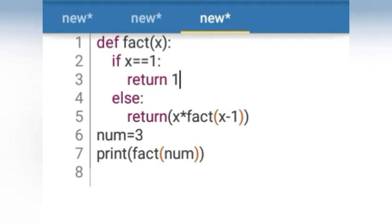Here we have x-1, so first x value was 3, keep it aside. Then we have x minus 1, so what value is here? The value is x is 2. So now we have x value 2. Is 2 equal to 1? No, then we will go to else part. Else means 2 into fact 2 minus 1.